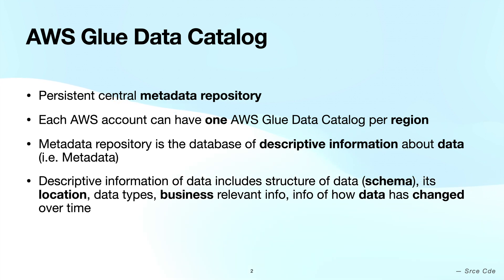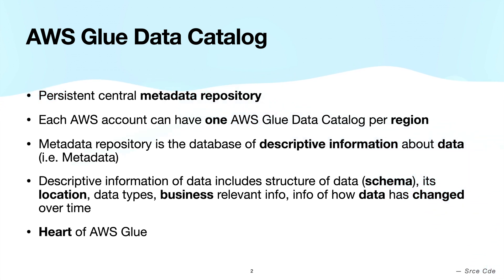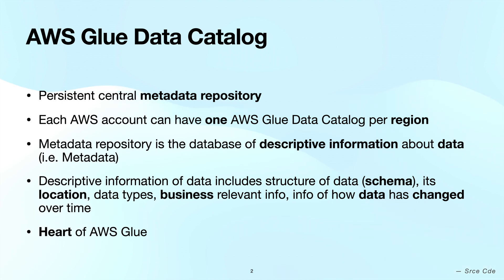AWS Glue Data Catalog is the core of the AWS Glue ecosystem where it stores information about the underlying data for us. We can interact with that information via different services like Athena, ETL jobs, and so on. Basically, AWS Glue Data Catalog is the name given to a group of components that work together to define the metadata repository for various use cases.